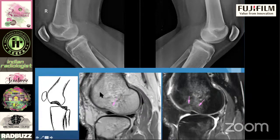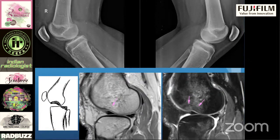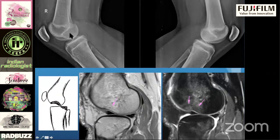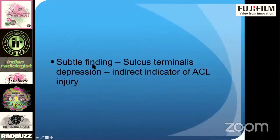On MRI it doesn't matter so much because you can directly see the ACL — the sulcus terminalis depression has no independent prognostic value there. But on an X-ray, you can put in the report that there is sulcus terminalis depression and request clinical correlation for anterior cruciate ligament insufficiency. This can occur in acute or chronic injury. You don't always know which, but you surely know that at some point this patient had an ACL injury — that's how you correlate X-ray findings to report soft tissue injuries not seen on X-ray.